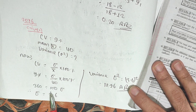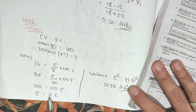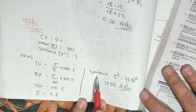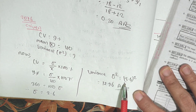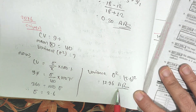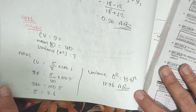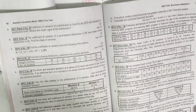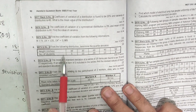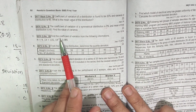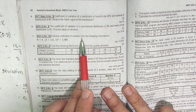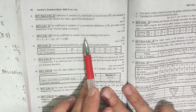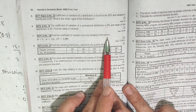The variance sigma squared is 12.96. That is the answer. Now we are going to find the coefficient of variation CV from the following information.